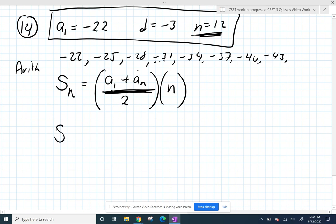So I want the sum of the first 12 terms by taking the average of my first term, that's negative 22, and my last term, which is... I don't know it again. So we're going to go find it.